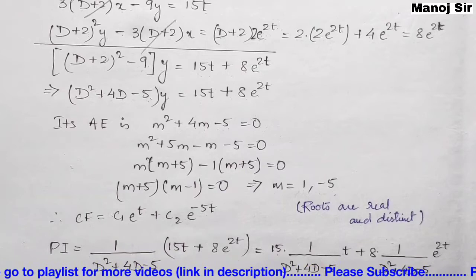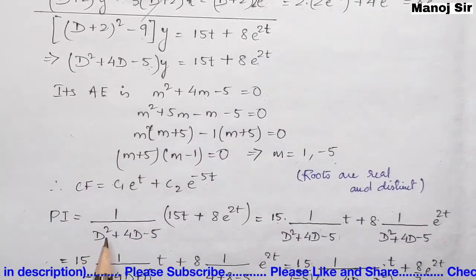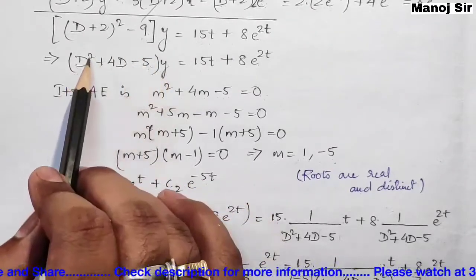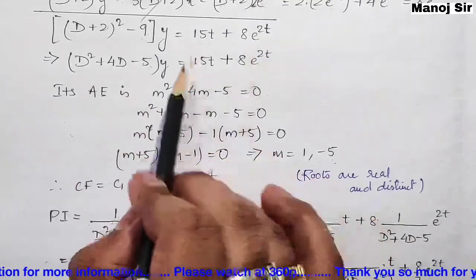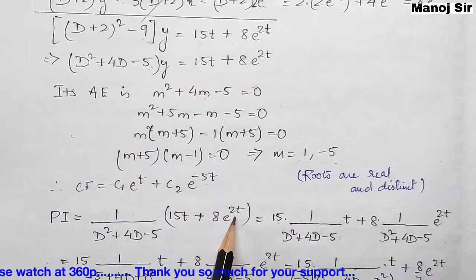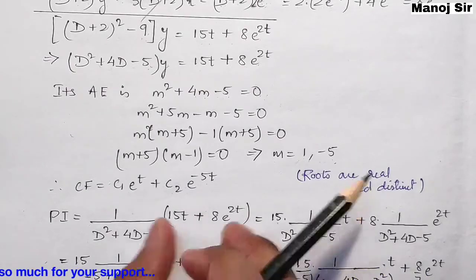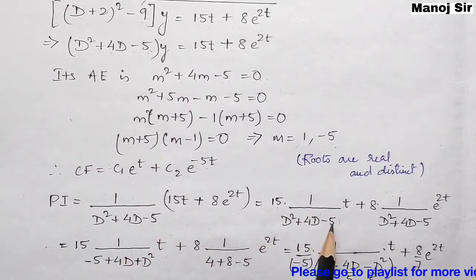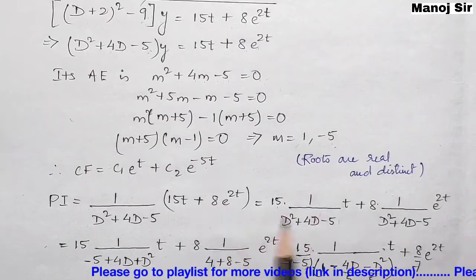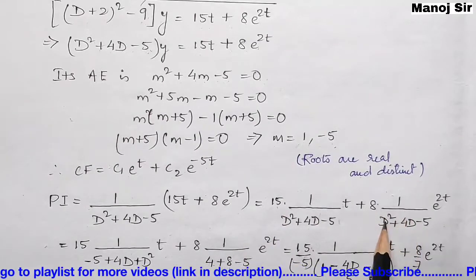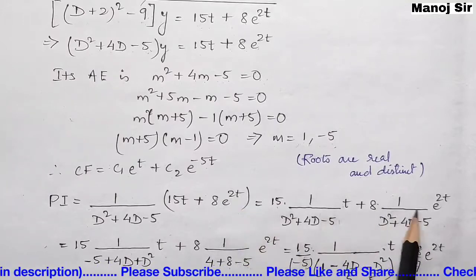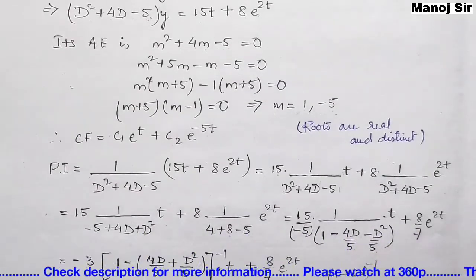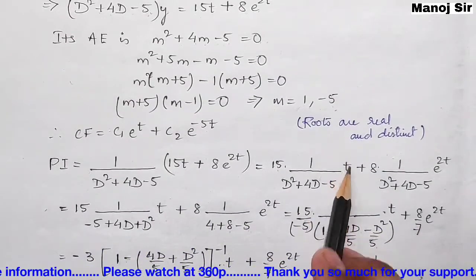Now we find the particular integral (PI). PI = 1/(D² + 4D − 5) × (15t + 8e^(2t)). Since we have addition, we split this into two parts: 15 × [1/(D² + 4D − 5)]·t, plus 8 × [1/(D² + 4D − 5)]·e^(2t).